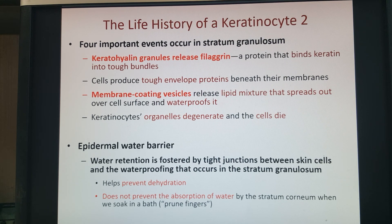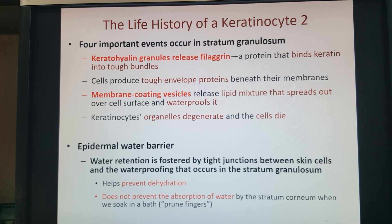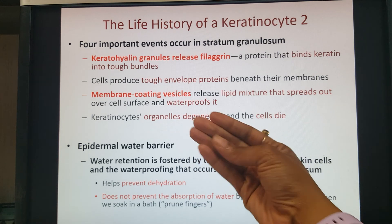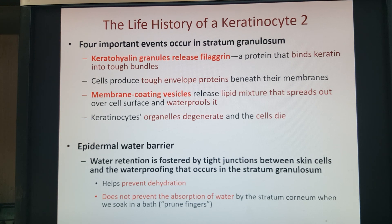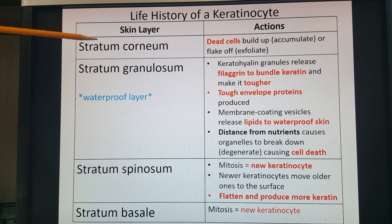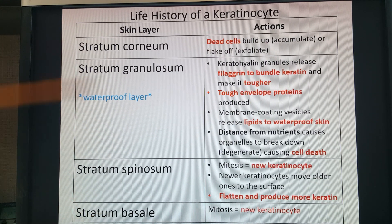If you stay in a bathtub or pool too long and your fingers get wrinkly, that's because the stratum corneum and stratum granulosum in your thick skin fingers absorb water in the outer dead layers, but the waterproof granulosum layer doesn't absorb it deeper. So the outer layers have more surface area while still attached to deeper layers, causing them to wrinkle up. The life history of a keratinocyte in summary: going from stratum basale up through stratum corneum, cells get old, nutrients become too low, and they die off — ending up as dead cells in the stratum corneum layer.